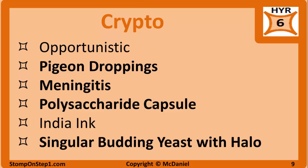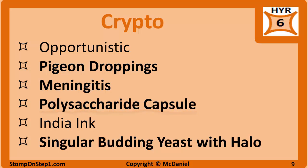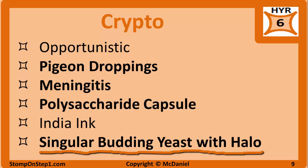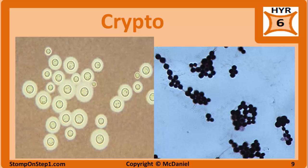Cryptococcus neoformans is an opportunistic mycosis associated with exposure to pigeon droppings. Following inhalation and infection of the respiratory system, Cryptococcus has a predilection for spreading to the meninges and causing meningitis. Cryptococcus is monomorphic and not present as a mold. Its main virulence factor is an antiphagocytic polysaccharide capsule, which can be seen with India ink stain. Histologically it appears as a single budding yeast with a halo. India ink staining reveals the capsule halo clearly.